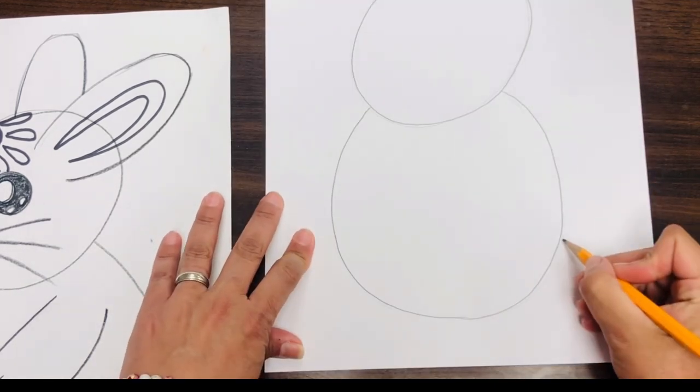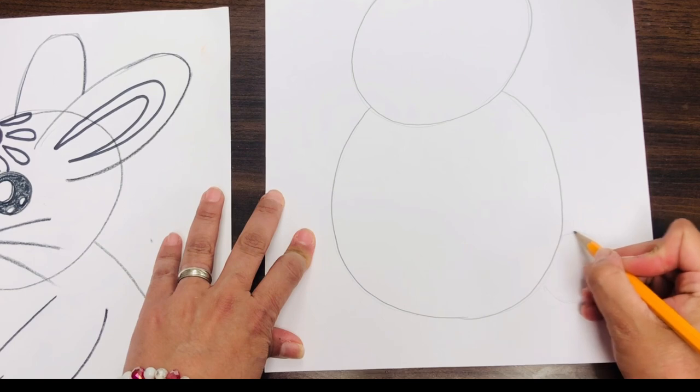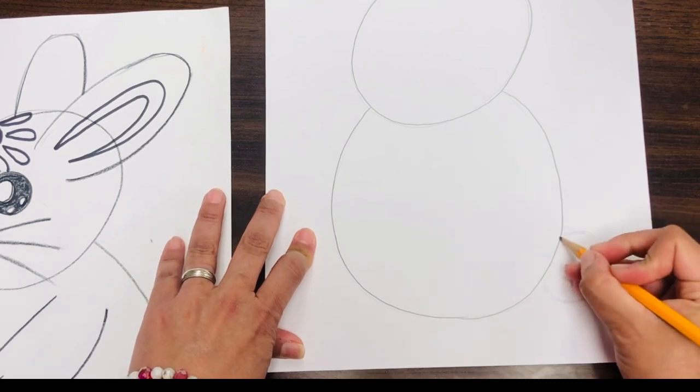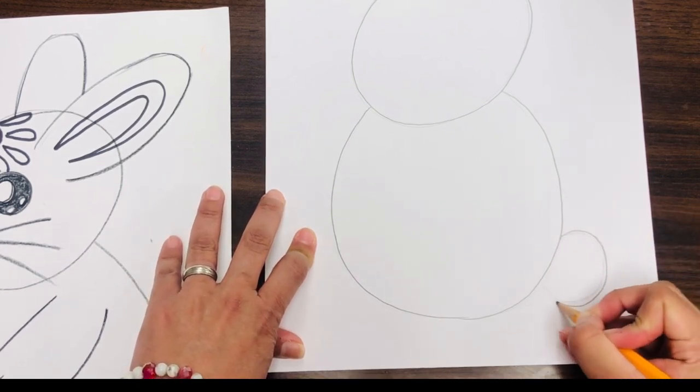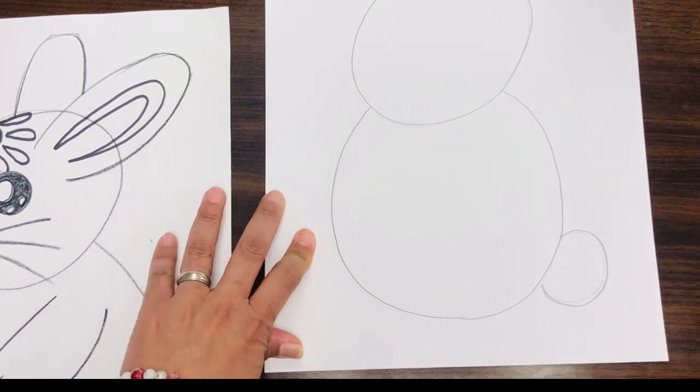Then we're going to do the cotton tail. It's just a circle, hiding a little bit behind the body. The body is overlapping the tail.